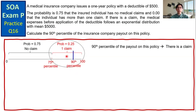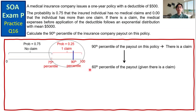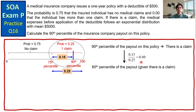The 90th percentile of the payout on this policy is equivalent to finding the 60th percentile of the payout given that there is a claim. Here we focus on the last 25%, and if we consider that there is exactly one claim, we need to consider the first 15%, reaching from the 75th percentile to the 90th percentile. So 0.15 over 0.25 gives us 0.6 — this is the 60th percentile of the payout given that there is a claim.